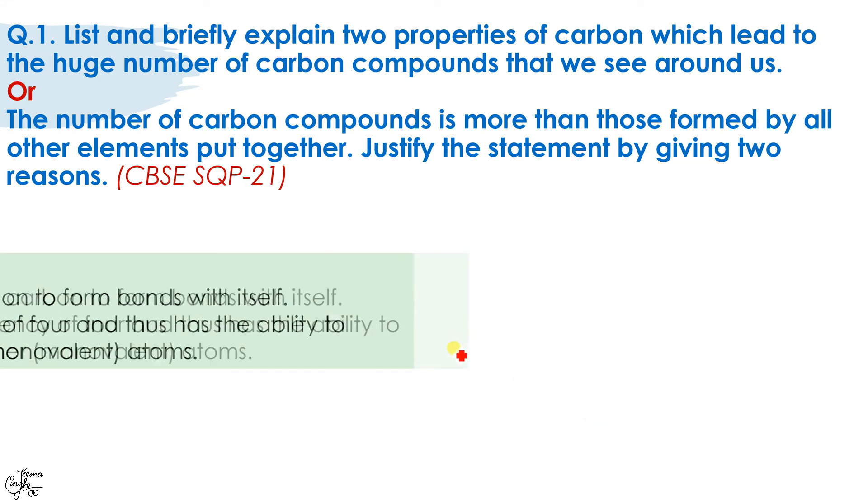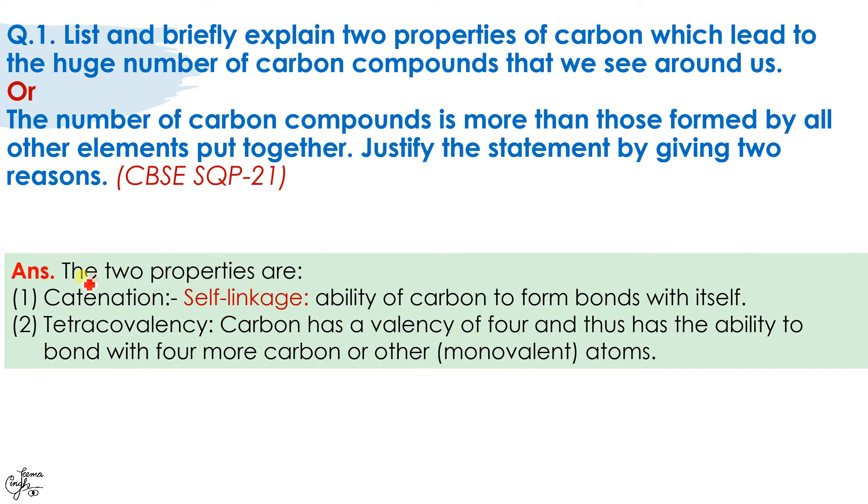So this was the question and your answer should be: the two properties are number one, catenation. Since it is list and briefly explained, do not forget this part. List means you only tell catenation and tetracovalency, and briefly explained means you're supposed to write a couple of lines with the help of figures to explain what catenation means.